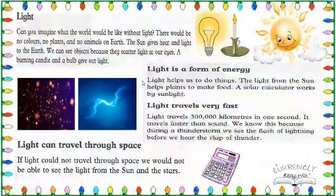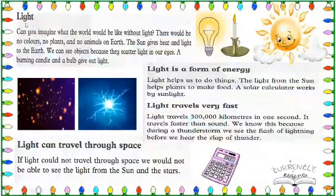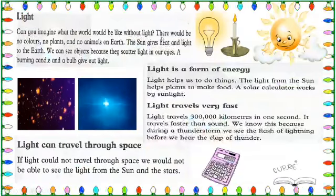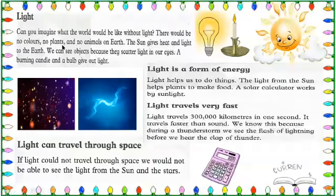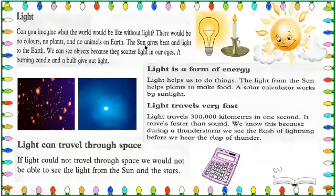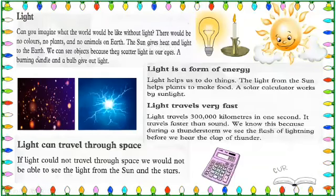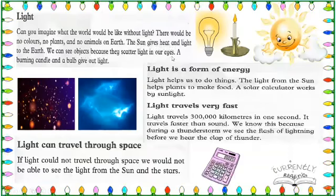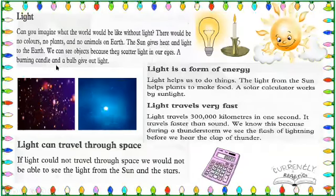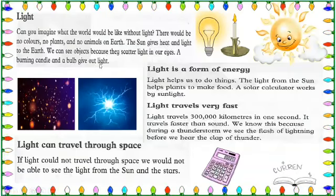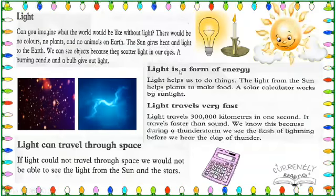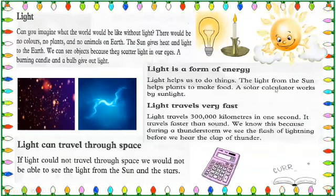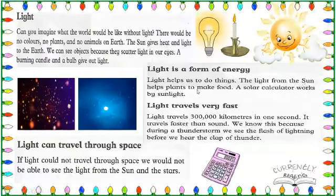Now we start reading. Can you imagine what the world would be like without light? There would be no colors, no plants, and no animals on earth. The sun gives heat and light to the earth. We can see objects because they scatter light into our eyes. A burning candle and a bulb give out light. Light is a form of energy. Light helps us to do things. The light from the sun helps plants to make food.